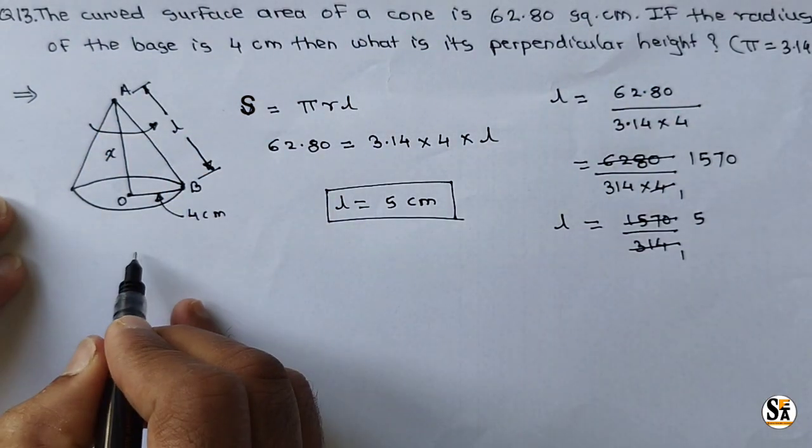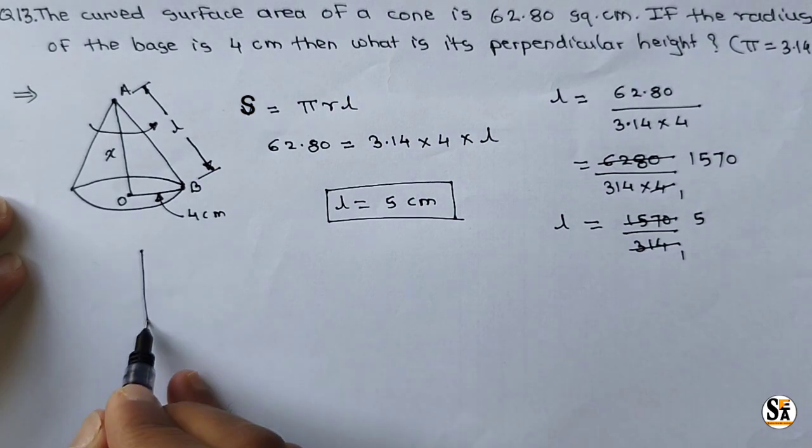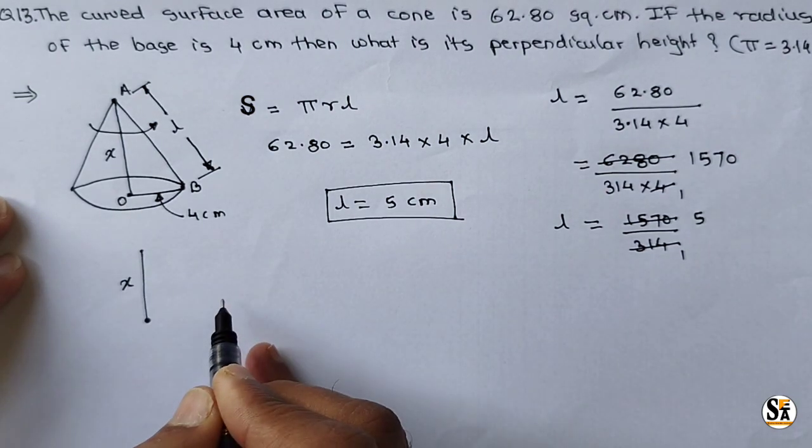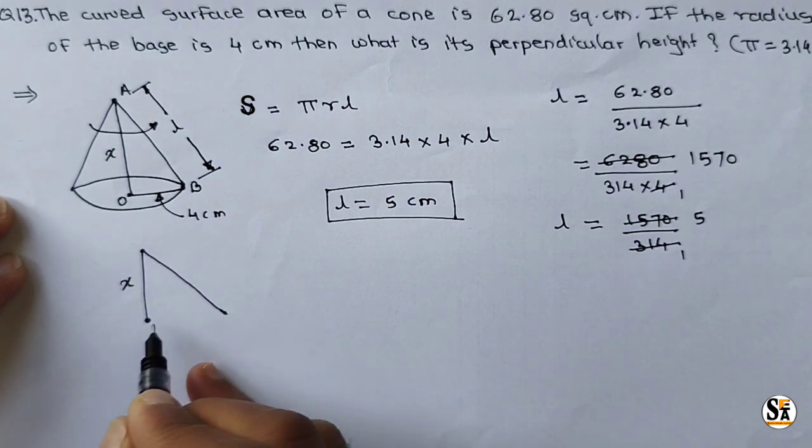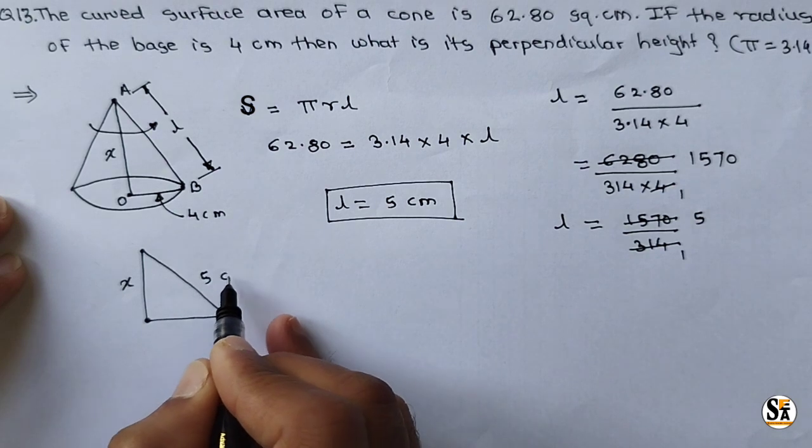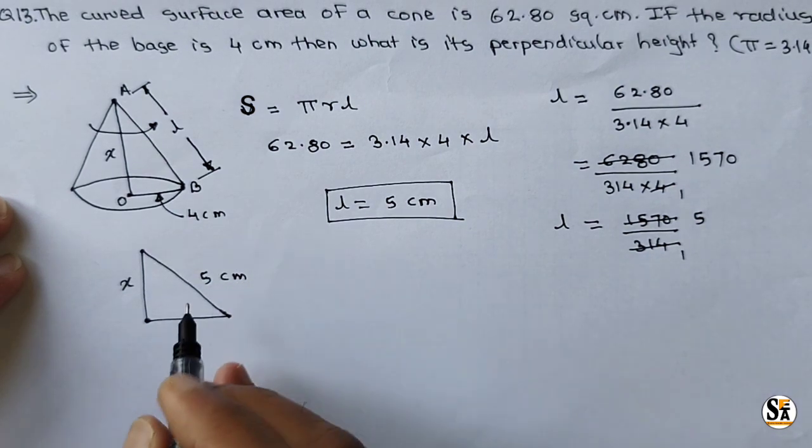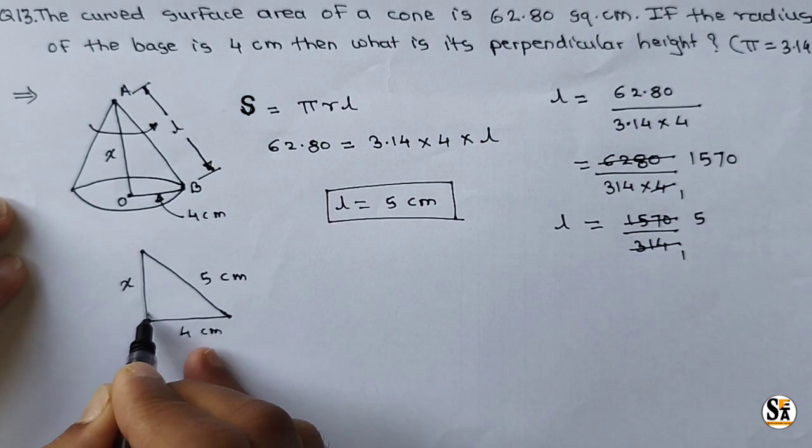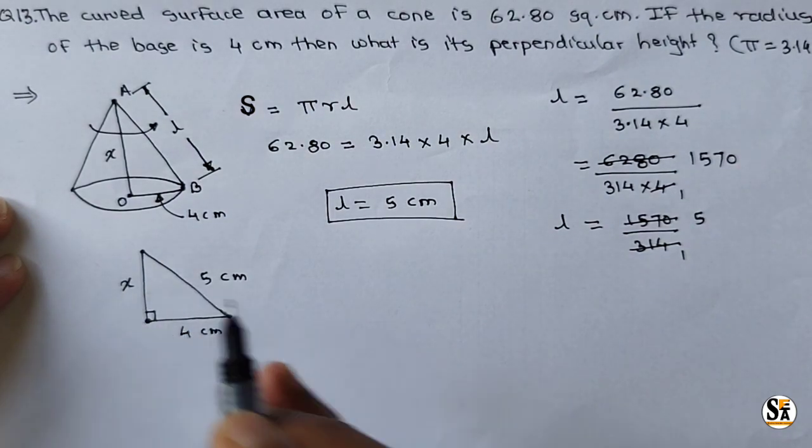We got L, that is this length. Now consider this right angle triangle, where this X we have to calculate. Then this L is given, and this radius we know. This L we calculate as 5 centimeter, and this radius is also given 4 centimeter. Now with the help of Pythagoras theorem, we can calculate X.